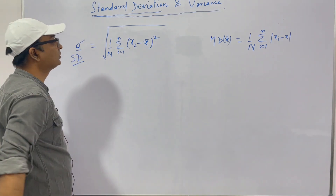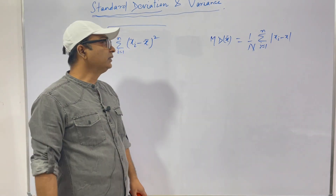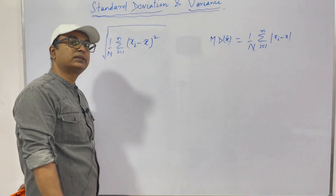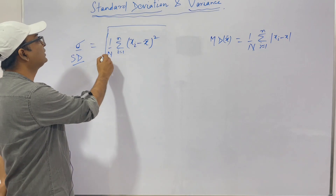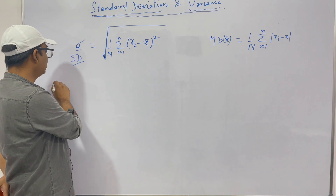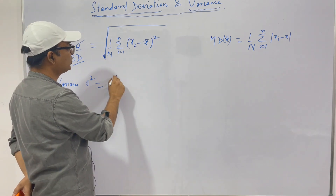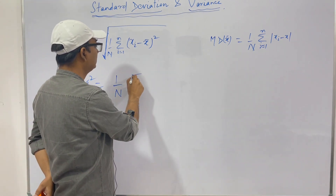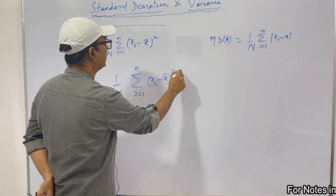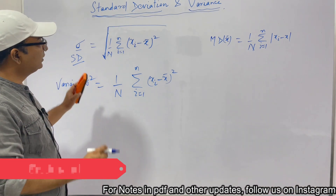So sigma = √(1/n · Σ(xi − x̄)²) for i = 1 to n. Then we define the second term, variance, which is the square of the standard deviation. Variance = (1/n) · Σ(xi − x̄)² for i = 1 to n. This comes in handy because many times it's difficult to find the square root.